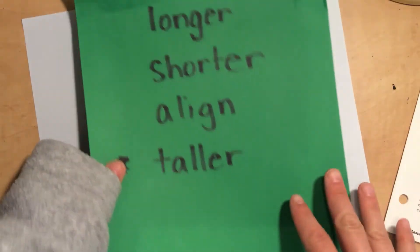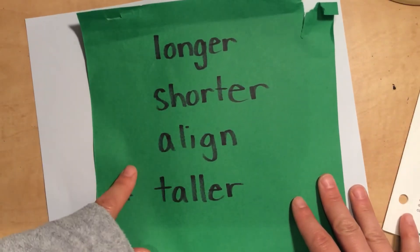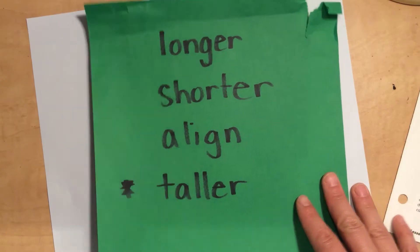Okay, so we were talking about these concepts: longer, shorter, align, and taller. And so today we're going to practice a little bit with some ribbon.